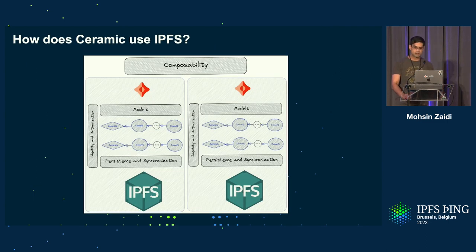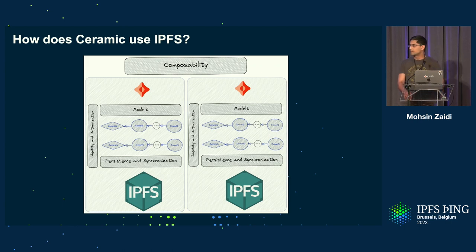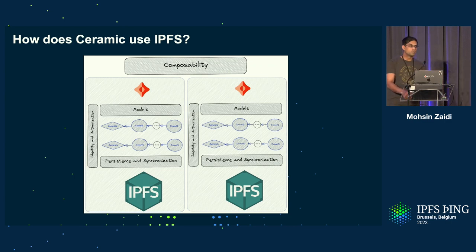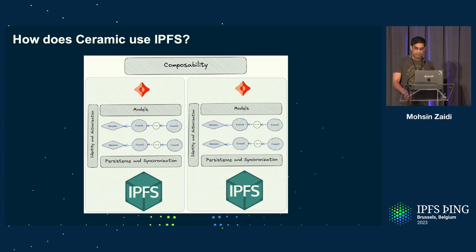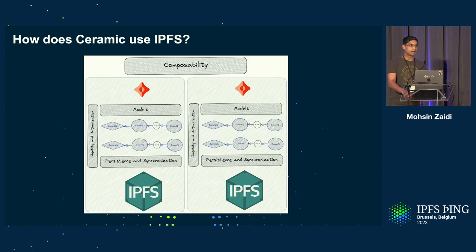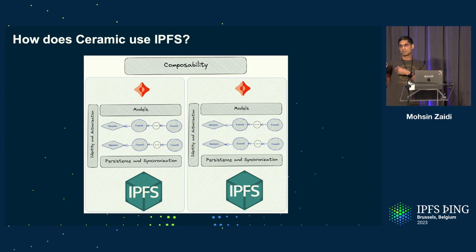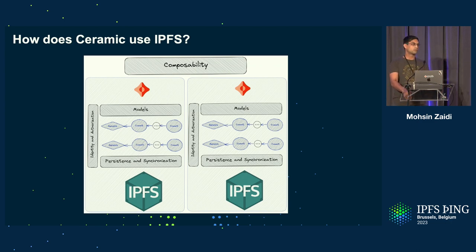So how does Ceramic use IPFS? Ceramic is an event streaming protocol with streams of hash-linked commits that are stored in IPFS — these are IPLD data structures. Ceramic also provides additional primitives for identity, data composability, and data modeling across nodes and applications. Stream tips are synchronized by sending requests over PubSub, and commits discovered via that mechanism are synchronized using BitSwap. Ceramic also bunches commits together in a Merkle tree and posts the root CID to Ethereum, and propagates them through PubSub to the rest of the Ceramic network. This is critical for Ceramic because it is our source of eventual consistency.